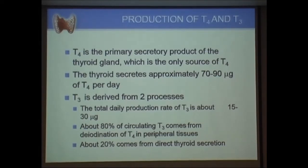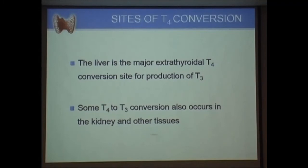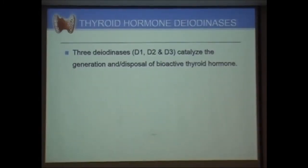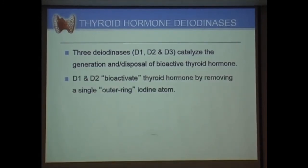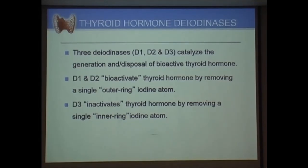The prime importance therefore remains testing T4 along with TSH. The main extra-thyroidal organ responsible for T4-to-T3 conversion is the liver, so liver dysfunction can cause significant problems in this conversion; kidneys and other tissues also contribute. There are three important enzymes involved in deiodination — deiodinases D1, D2, and D3. D1 and D2 activate the hormone by converting T4 to T3, while D3 deactivates the thyroid hormone.